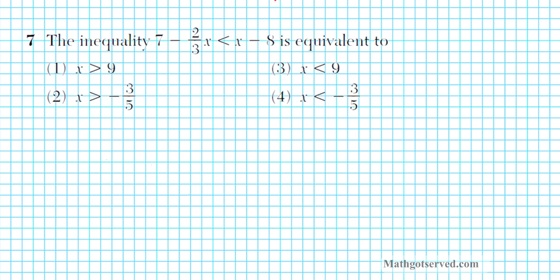Let's take a look at problem 7. It says the inequality 7 minus 2/3x is less than x minus 8 — find the equivalent form, which is essentially asking us to solve this inequality. Solving inequalities is very similar to solving equations. The only difference is: do not forget to reverse the symbol when you divide or multiply by a negative.